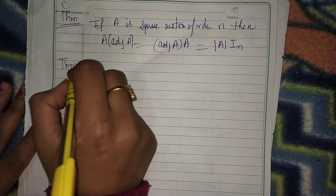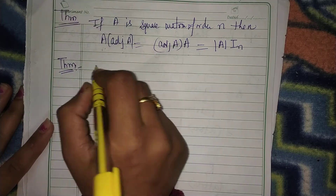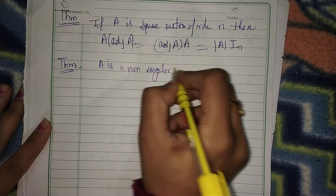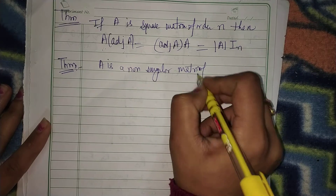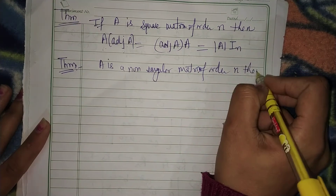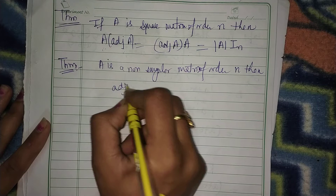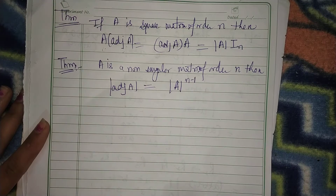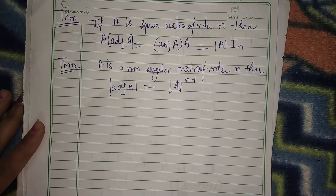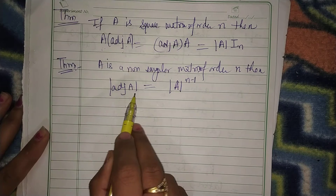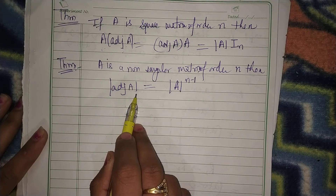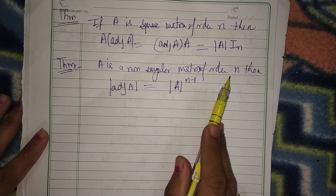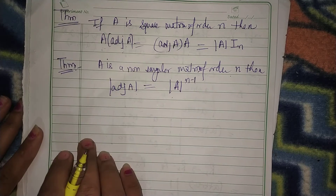Whether you take A into adjoint of A, or adjoint of A into A, both will be the same. And both are equal to determinant of A times the identity matrix of order n. Next theorem — we will also not prove this one. It says if A is a non-singular matrix of order n, then the determinant of adjoint of A equals determinant of A raised to the power n minus 1, where n is the order of matrix A.